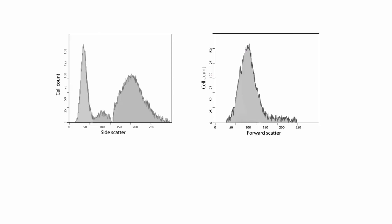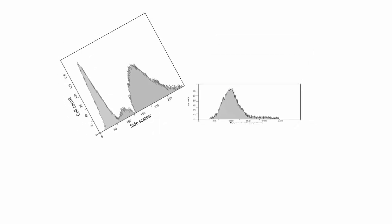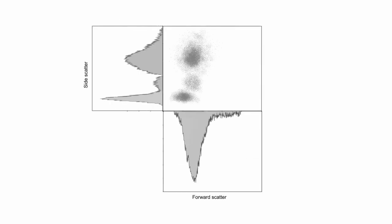By analyzing the forward and side scattered data together, the researcher can understand a cell's size, shape, and complexity.